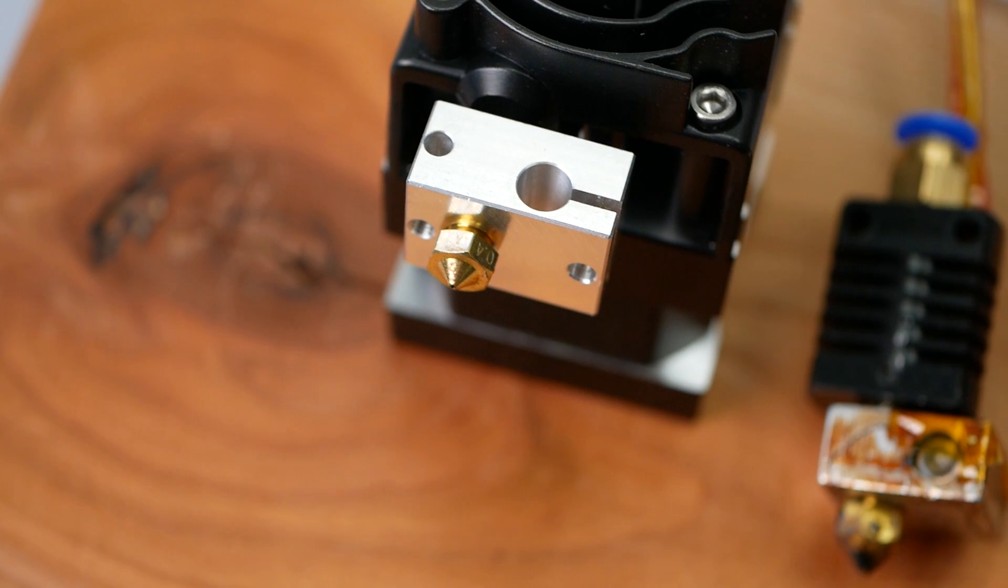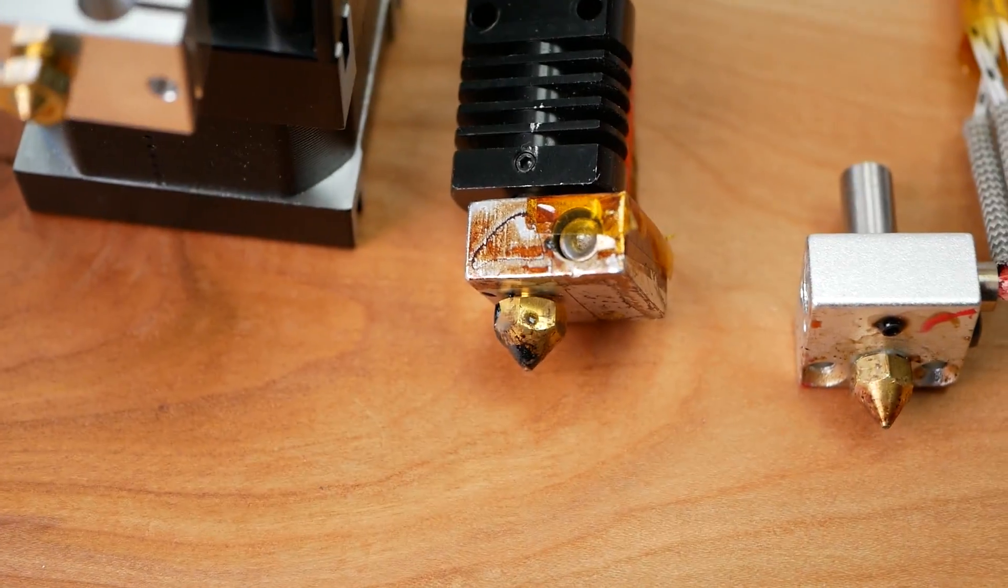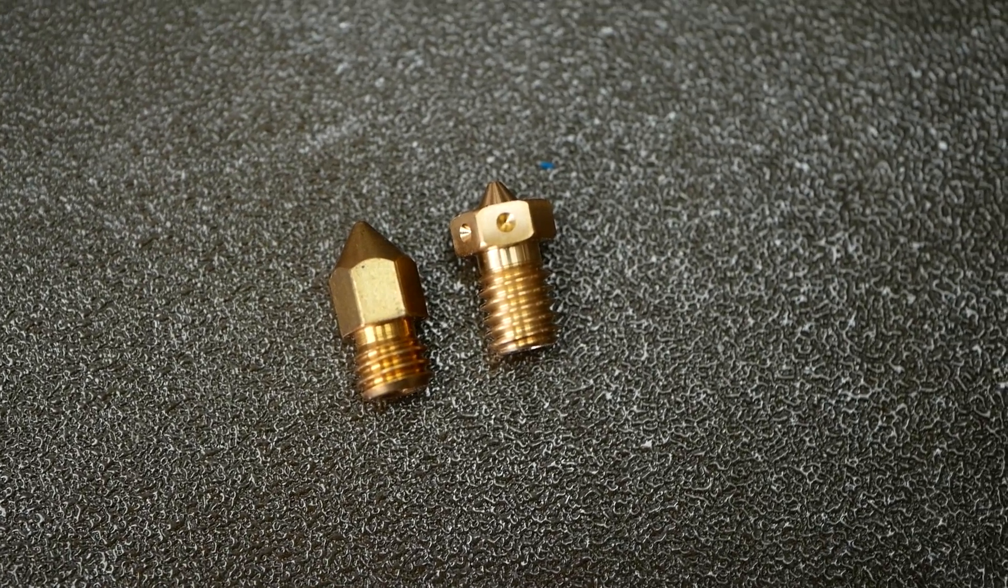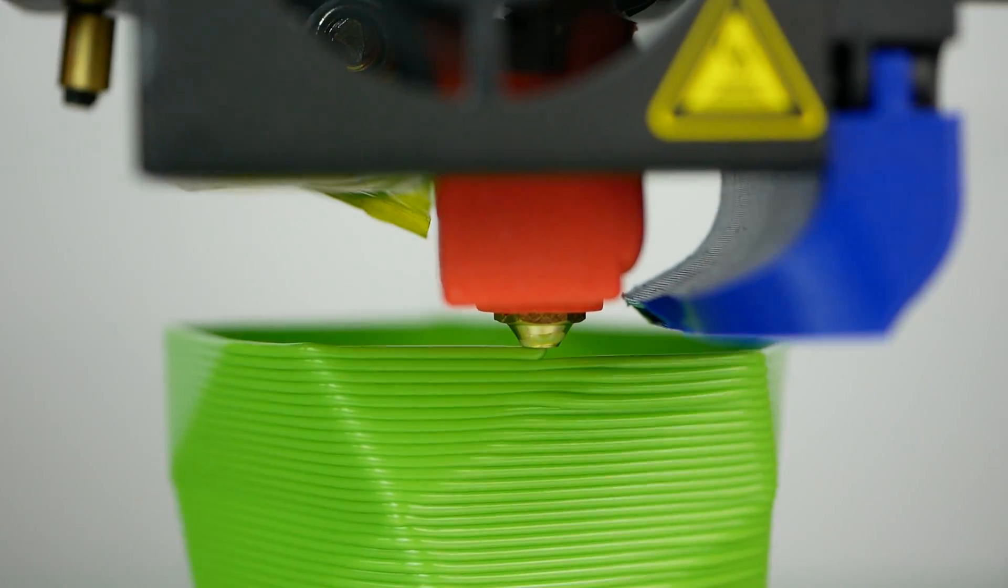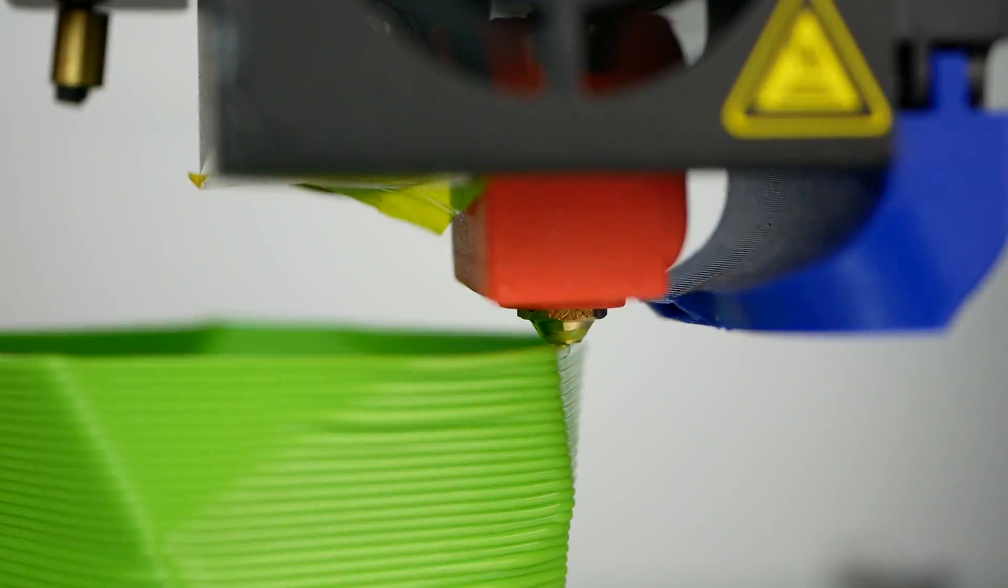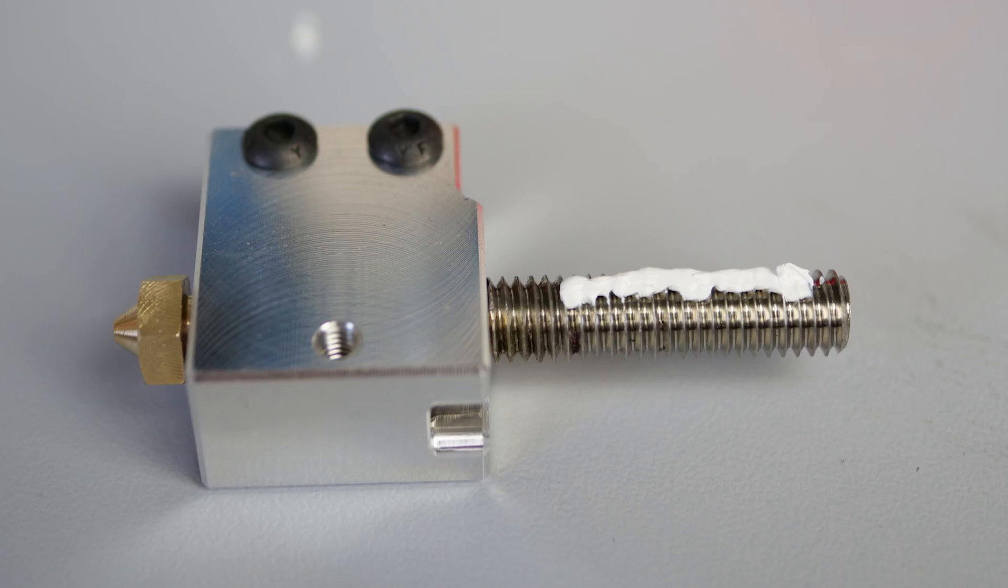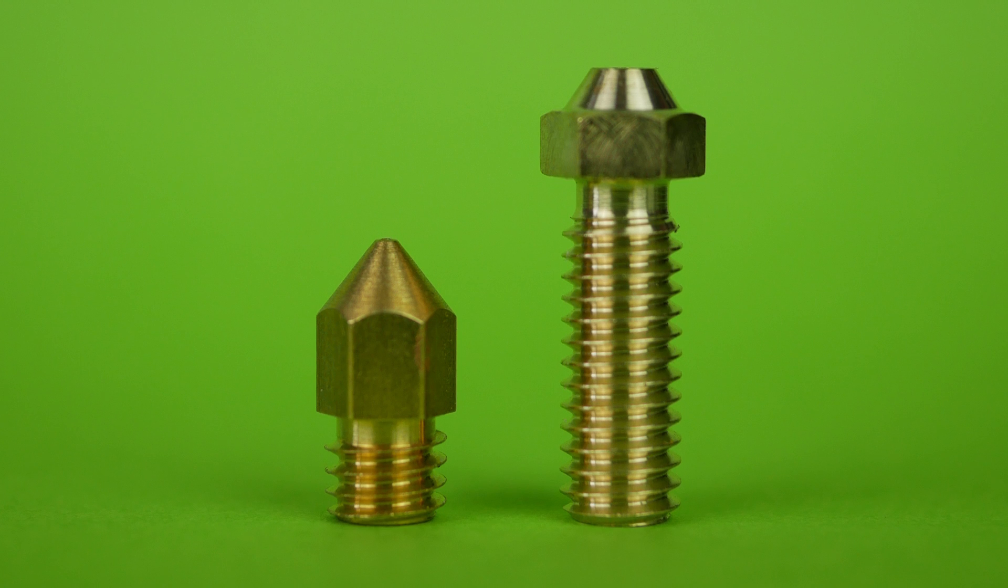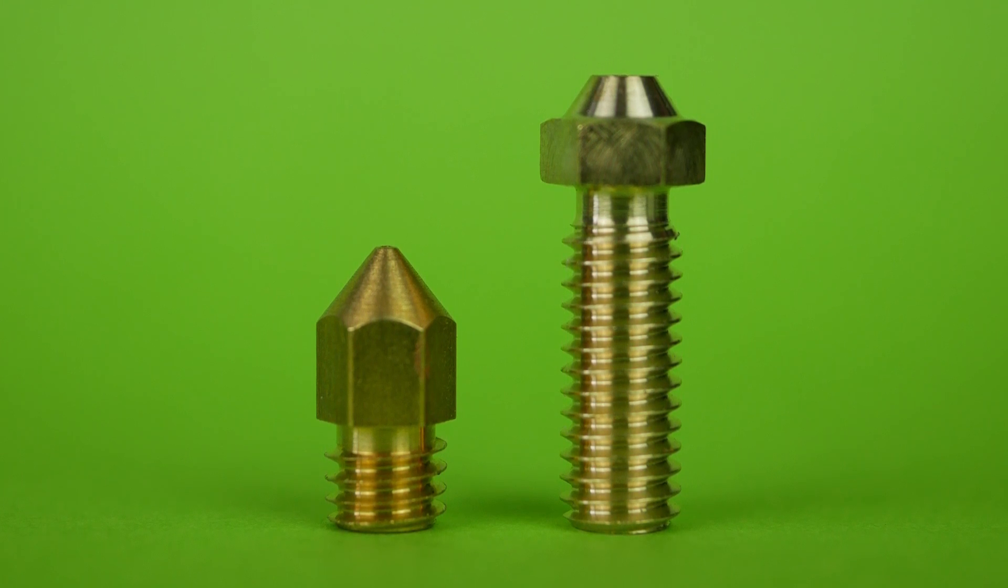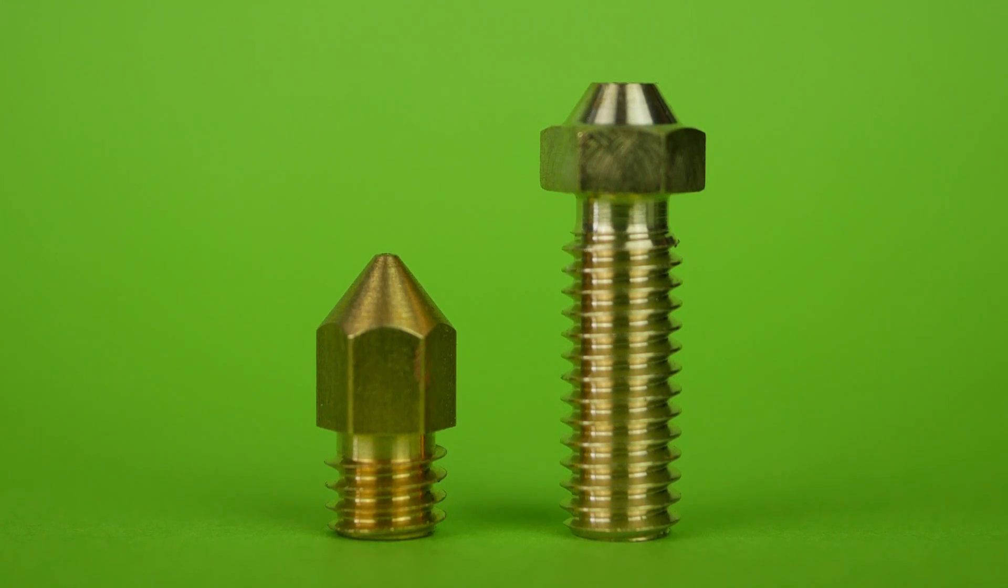The hotends of common 3D printers look pretty much the same and mostly use these small nozzles where the material is melted. I think everyone has already heard that for printing faster and especially with bigger nozzles, a so-called Volcano hotend might be necessary. They use longer nozzles and give the filament more time to properly heat and melt before the plastic leaves the nozzle.